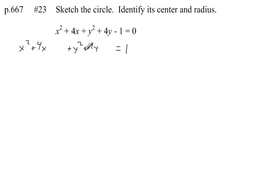This is a plus 4y. What we need to do is complete the square for each of these. To complete the square, first make sure we have 1x squared, which we do. Then take half of this number, which is 2, and square that, which gives us 4.